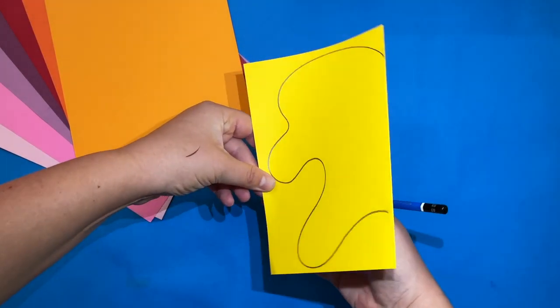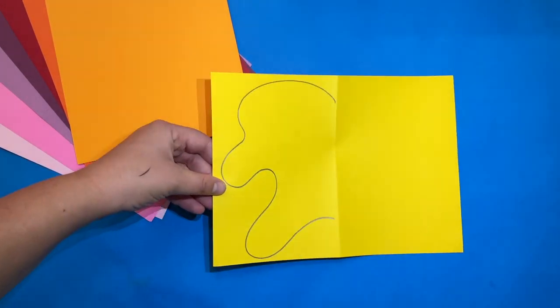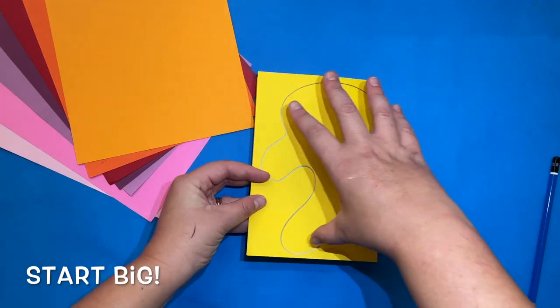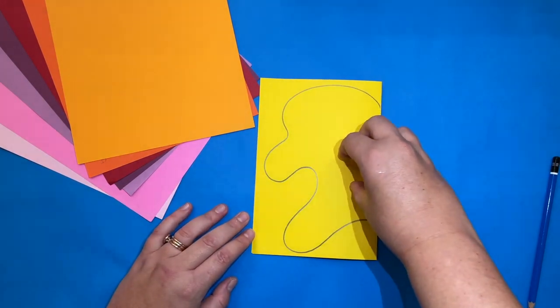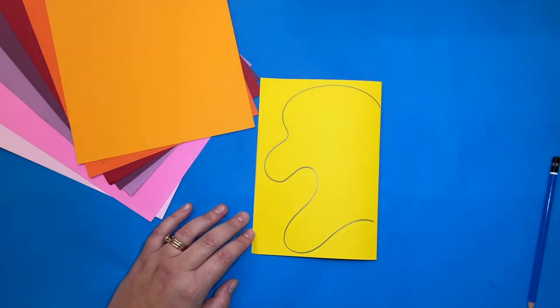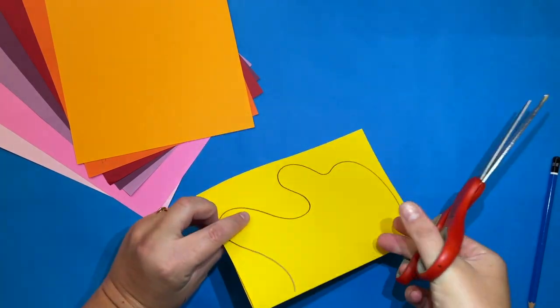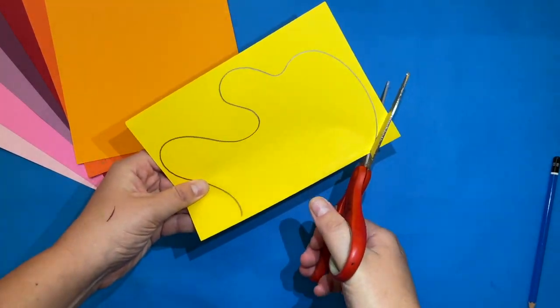Open your paper and double check that your shape opens up on the folded side. Your shape should be nice and big because later we are going to make our shape smaller and smaller as we cut. Now take your scissors once you've checked that it opens on the folded side and cut out your shape.